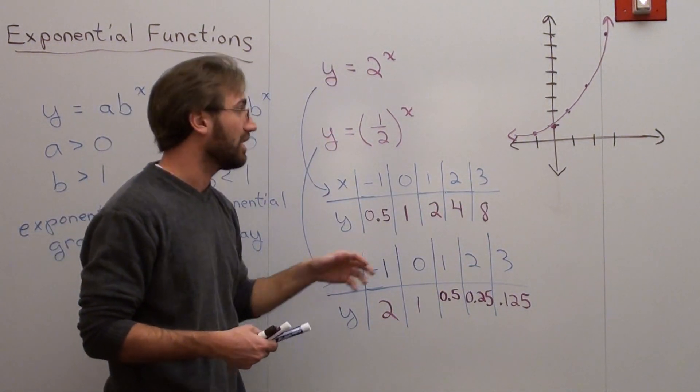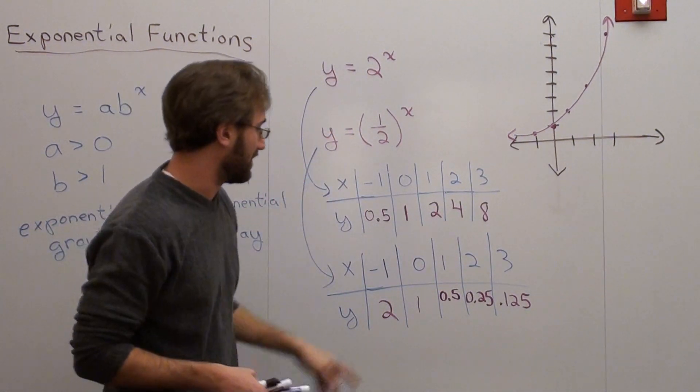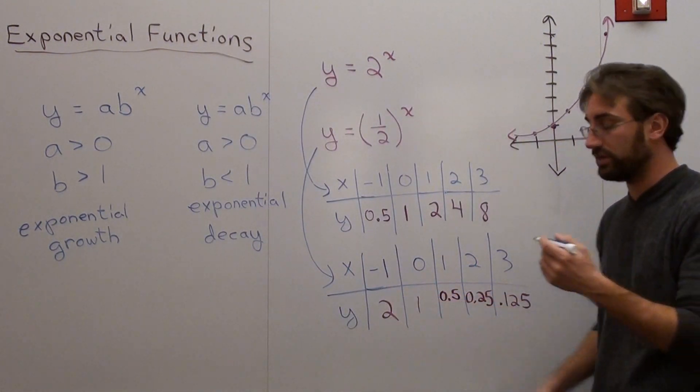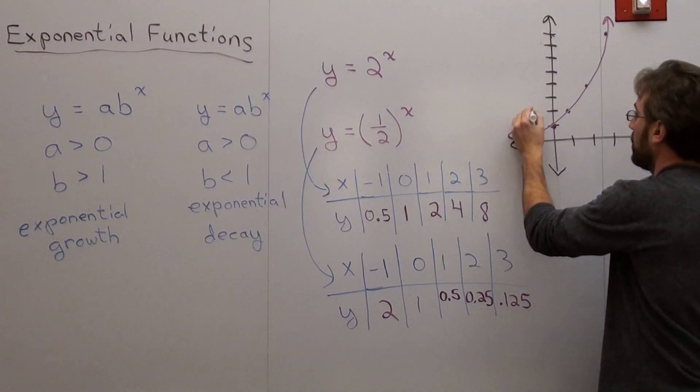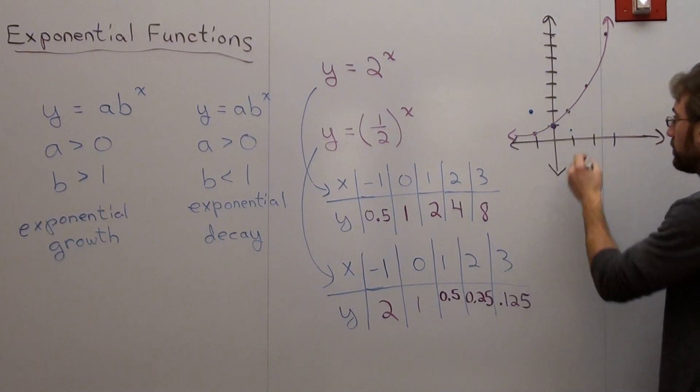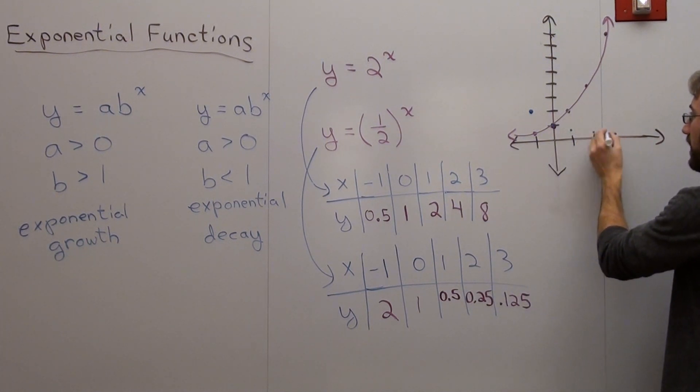Exponential decay, on the other hand, is the opposite, basically. I'll do this one first. Negative 1, 2. 0, 1. 1, 0.5. 2, 0.25.